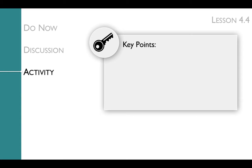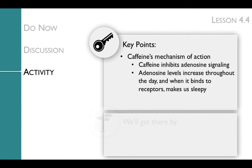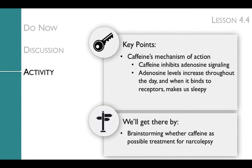The key points of the lesson activity are caffeine's mechanism of action, specifically that caffeine inhibits adenosine signaling, and that adenosine levels increase throughout the day, and when it binds to its receptors it makes us sleepy. We'll get to this key point by brainstorming whether caffeine is a possible treatment for narcolepsy, and with a Socratic discussion.